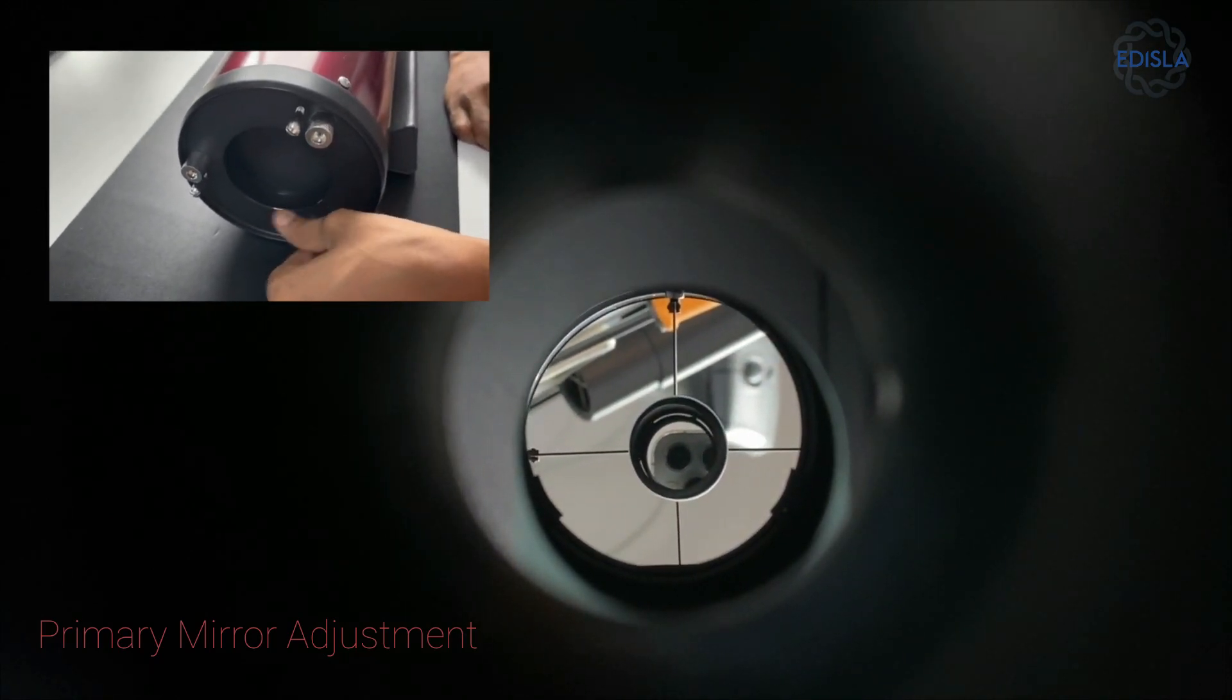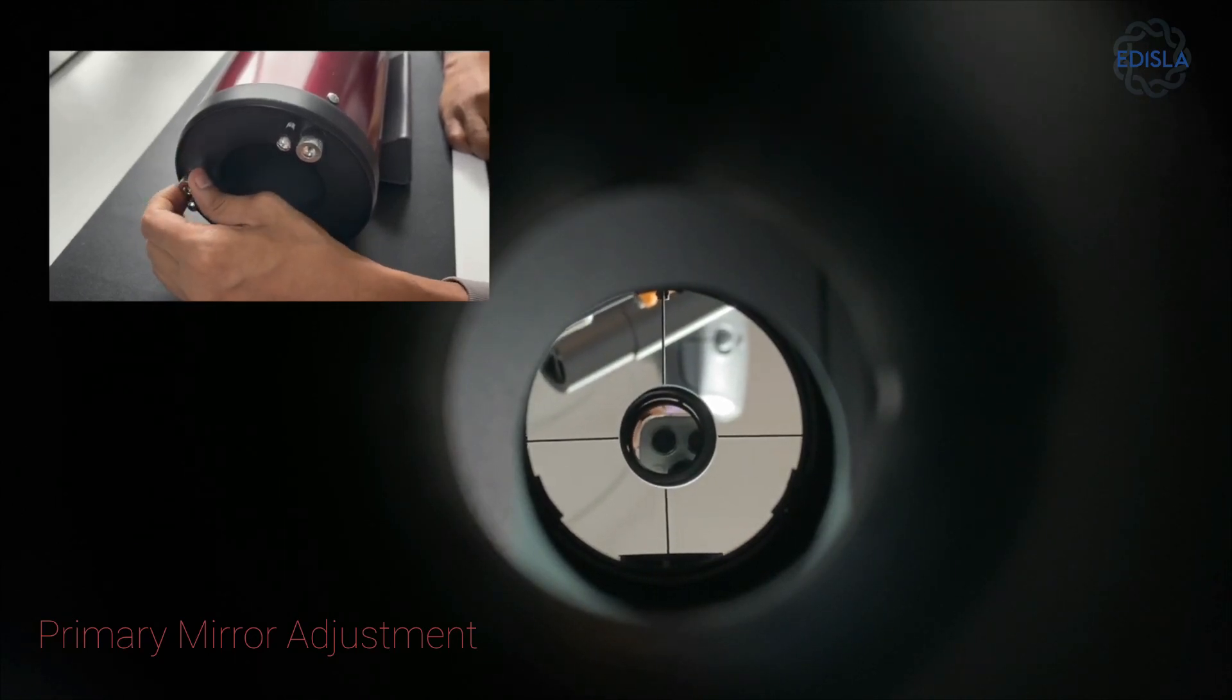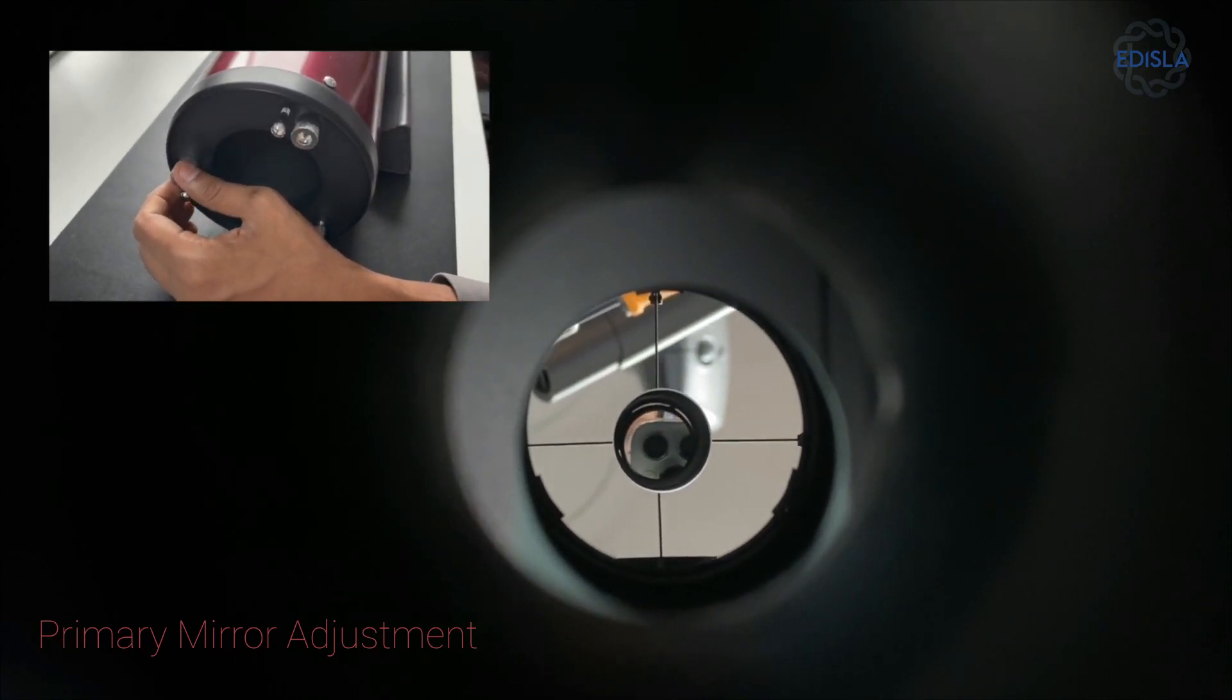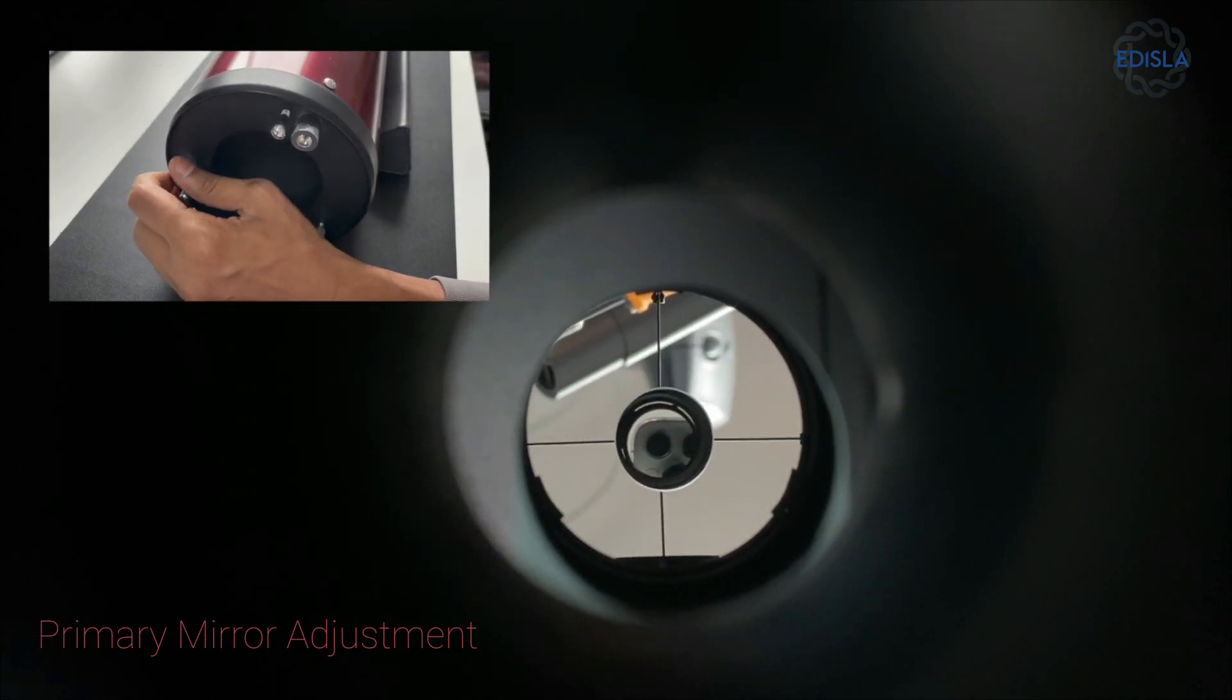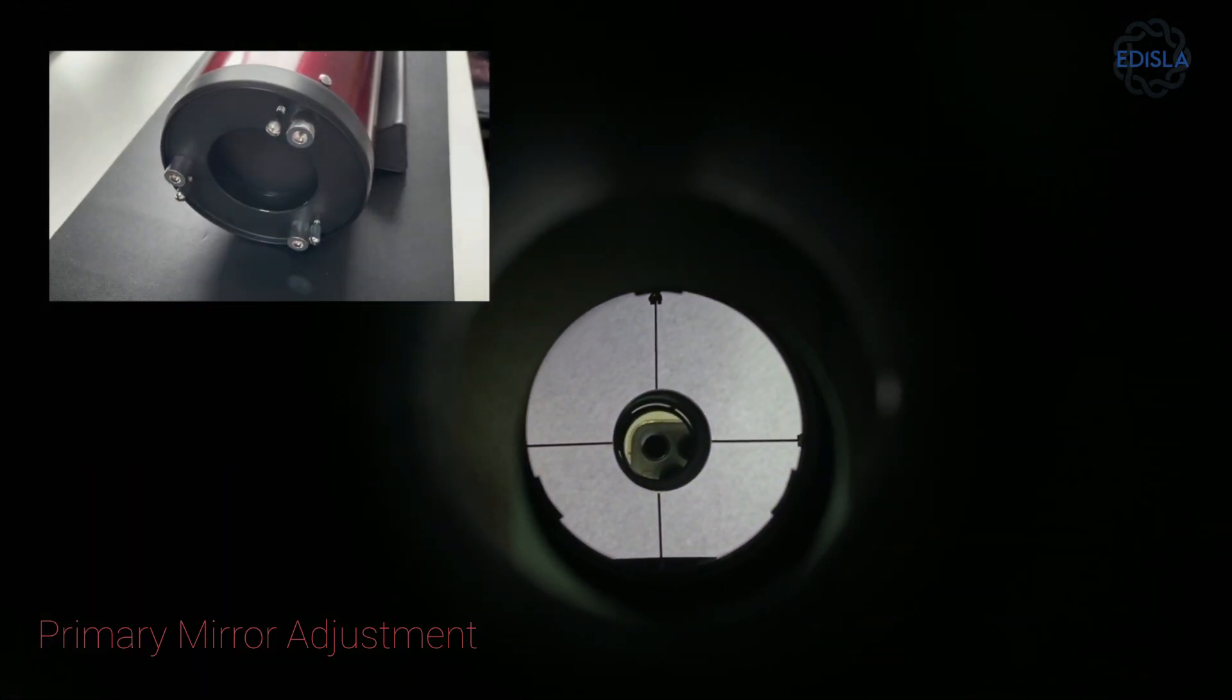This process may take a little time and patience, but with practice it becomes easier and is especially useful for larger telescopes. Continuously check the symmetry using a white sheet as you make adjustments.